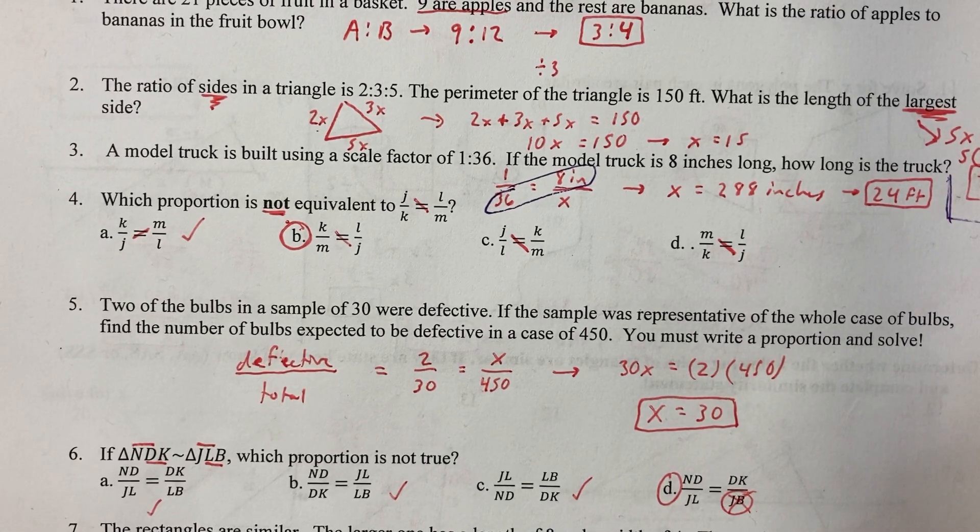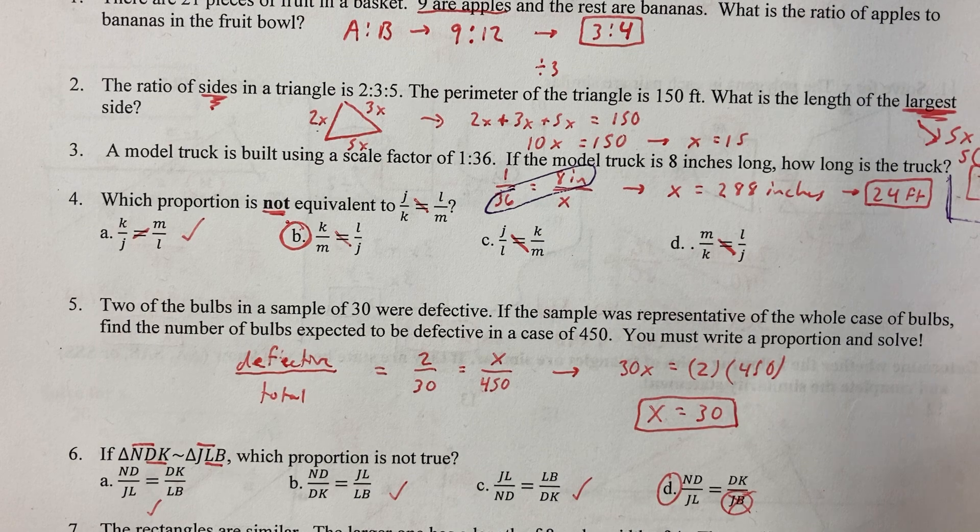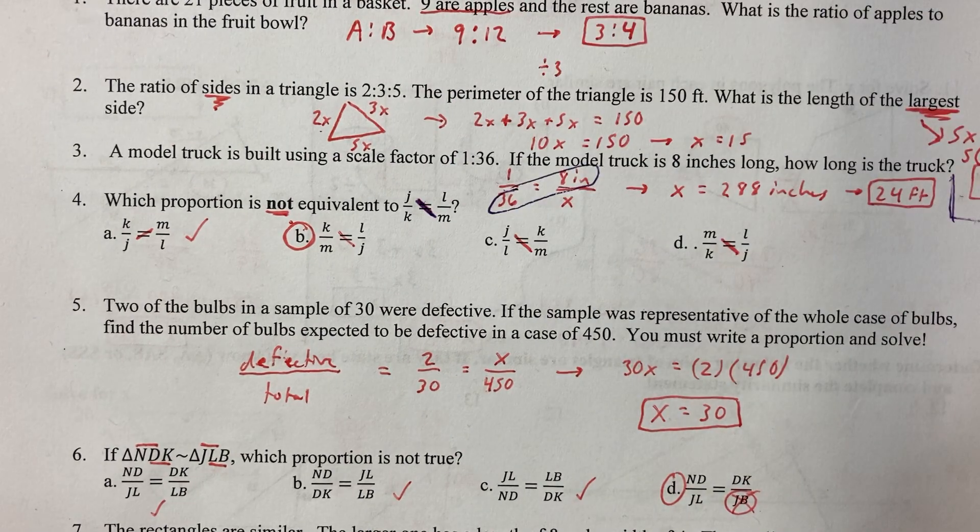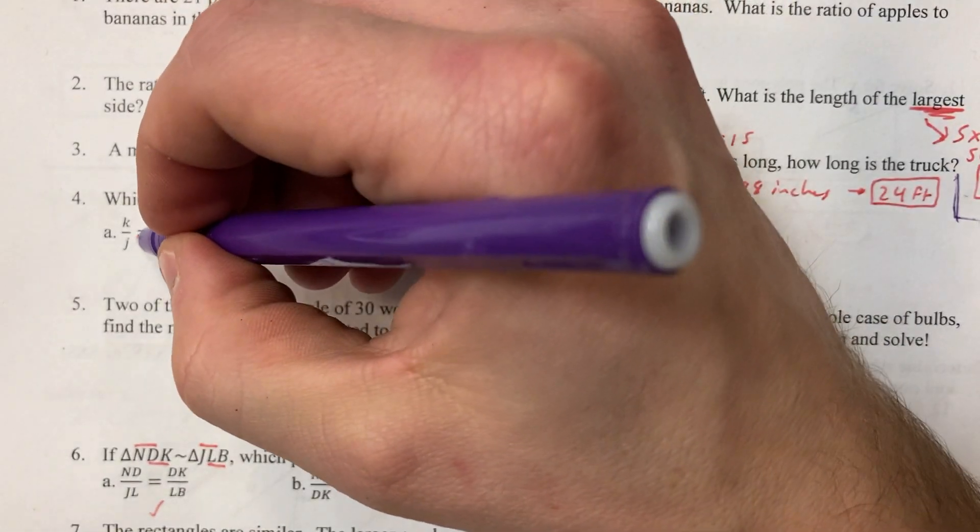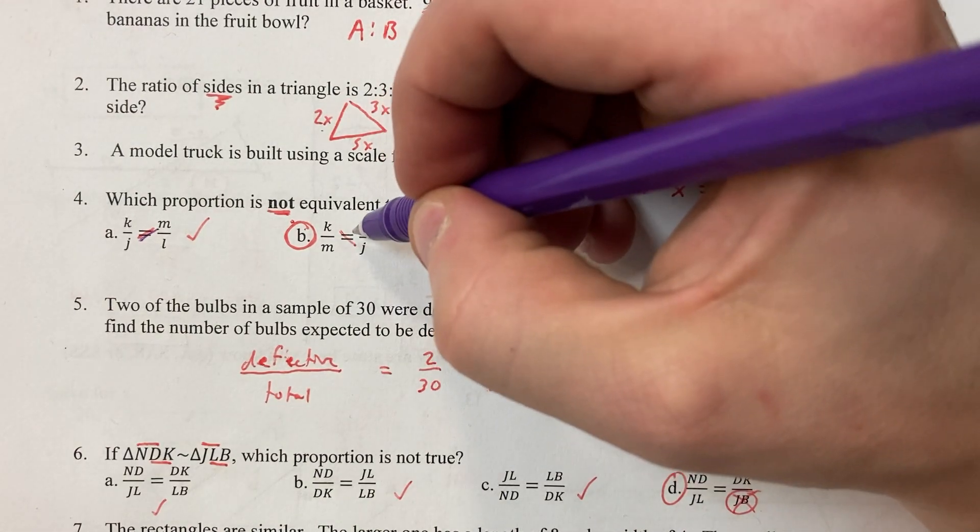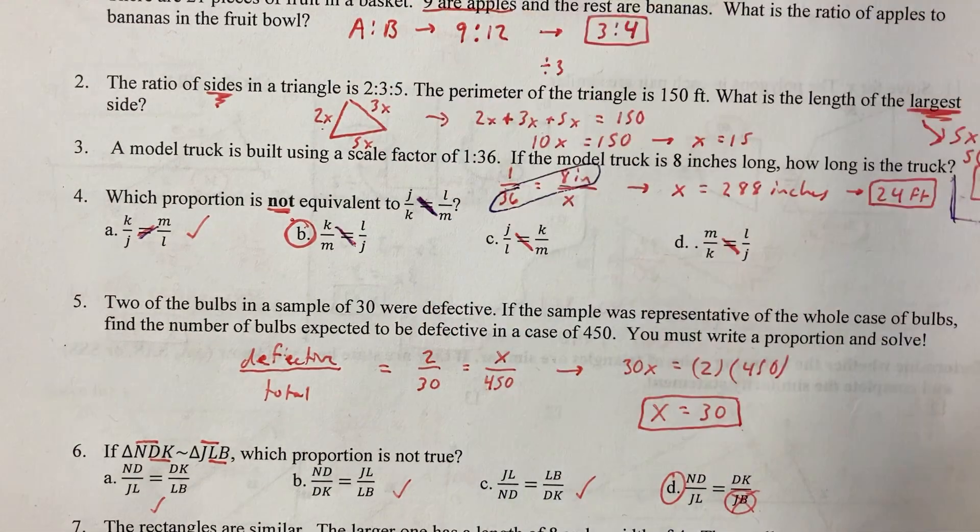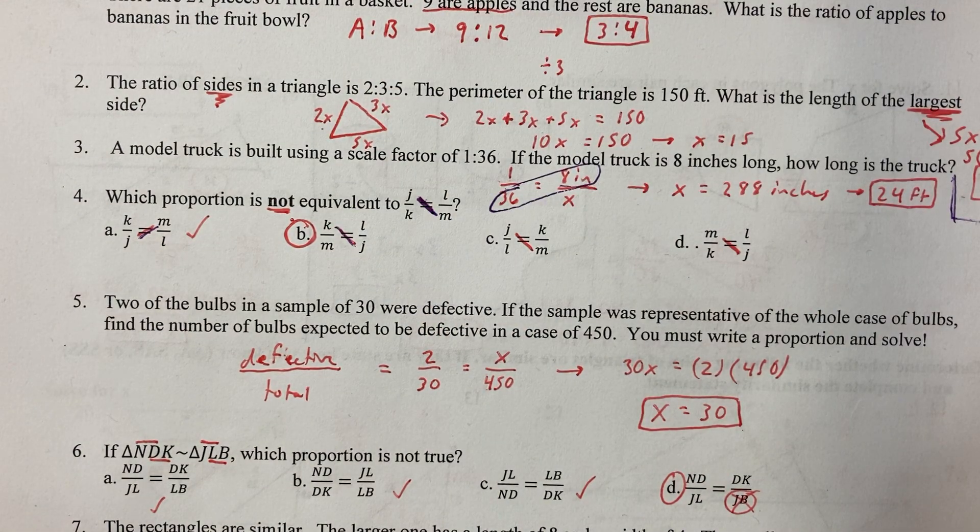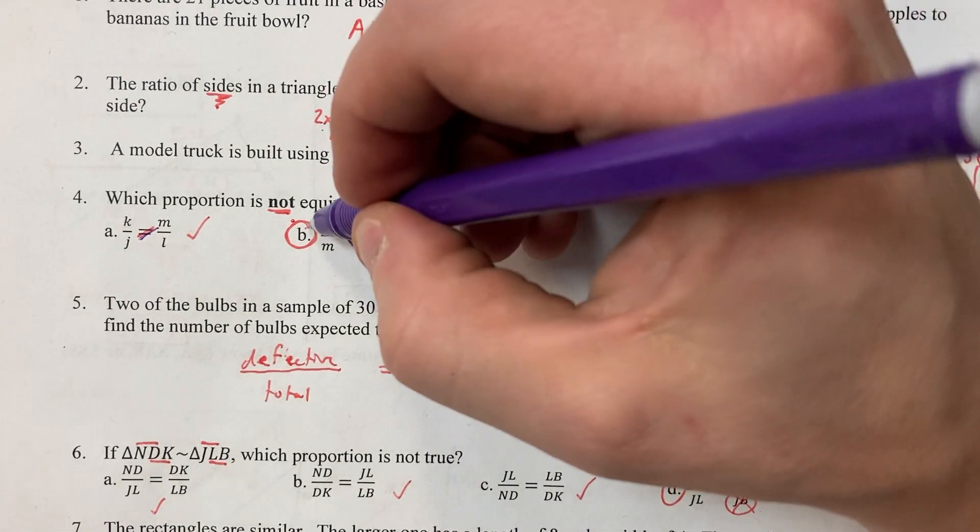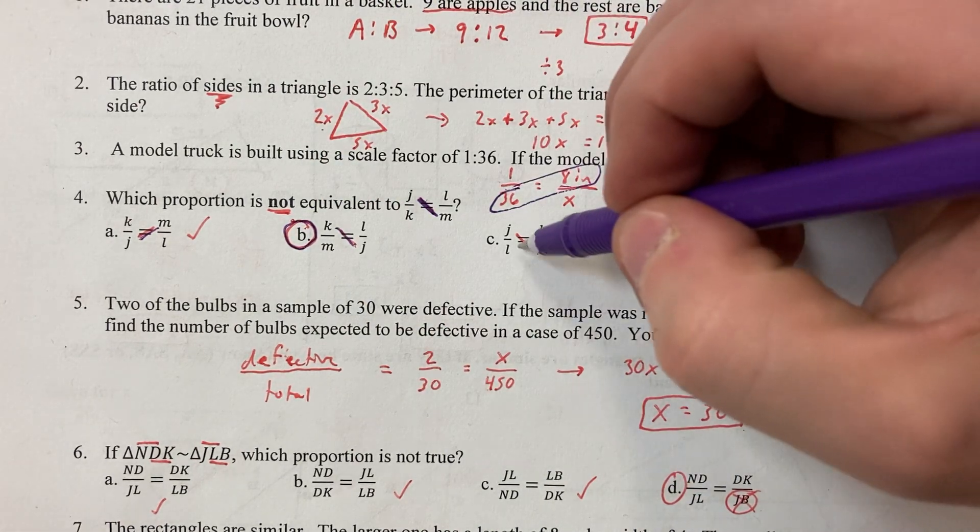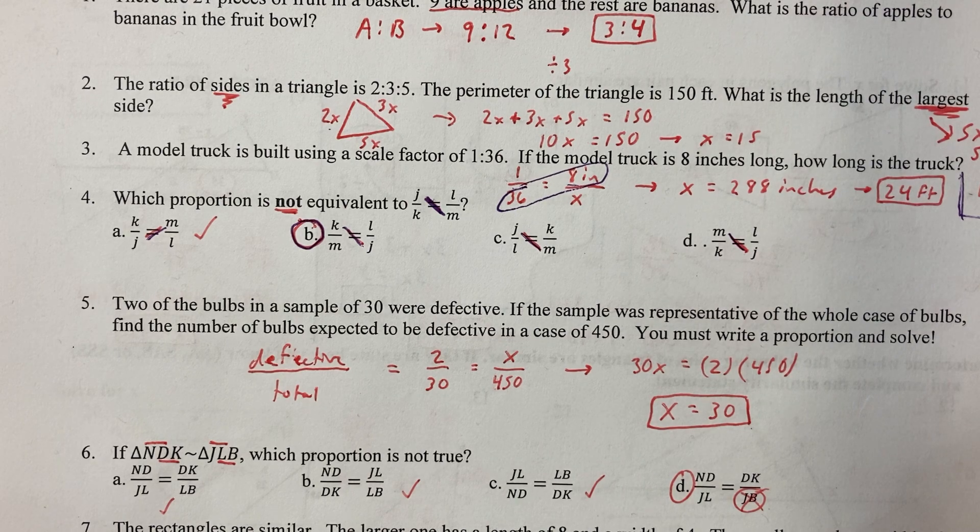Number four. We just have to make sure that you cross multiply and get J times M. That's not a correct cross multiplication. J times M, J times M. There we go.